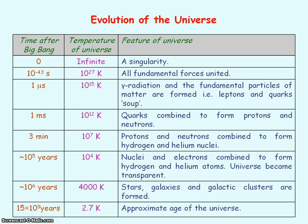One microsecond after the big bang, gamma radiation was formed. And the fundamental particles of matter was formed. So we had a soup of leptons and quarks. A millisecond after the big bang, the quarks combined to form hadrons. That is protons and neutrons.